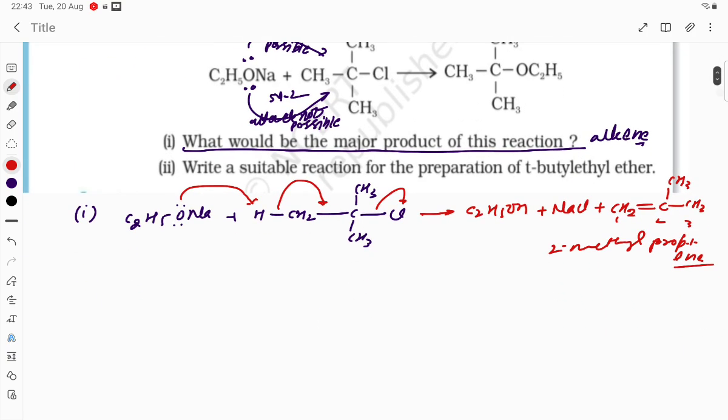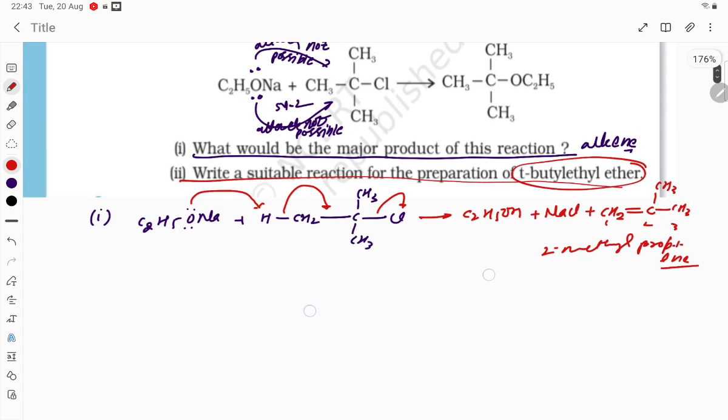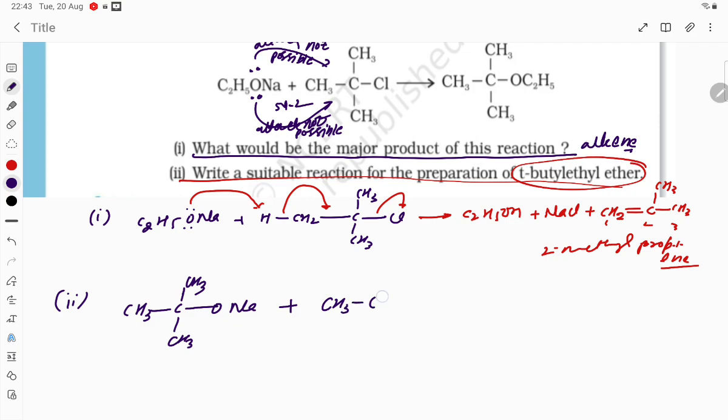Now the second portion: write a suitable reaction for the preparation of t-butyl ether. Very simple student, there should be SN2 attack possible. So here if I am taking CH3-C with CH3, CH3, and ONa, and here we are taking CH3-CH2-Cl.